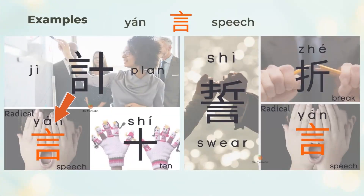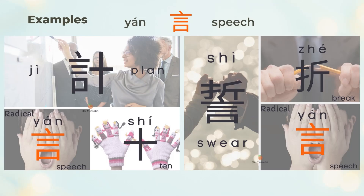计 means to plan. 计 is the left 言 (speech) and the right 十 (ten). You may imagine people discuss and deliver a speech ten times to make a plan. 誓 means to swear or promise. 誓 is the top 折 (to break) and the bottom 言 (speech). 誓 relates to 言 (speech), and we can break it.